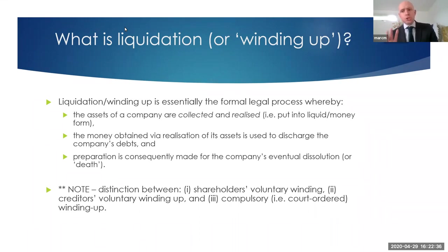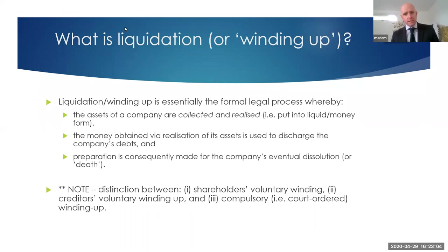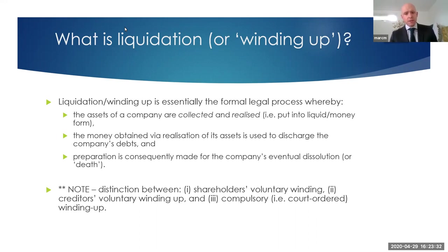The third and most common type of winding up is what's known as a compulsory winding up, which is not triggered by the shareholders but by the court. Typically, an unpaid creditor will apply to the court and ask it to put the company into liquidation. The court will then make a winding up order and appoint the liquidator to act on the creditor's behalf. Compulsory winding up tends to be the most common because the people controlling the company don't want to admit it's the end of the road, leaving it to unpaid creditors to trigger the process.